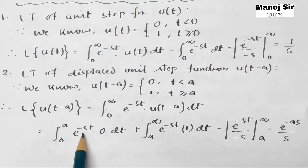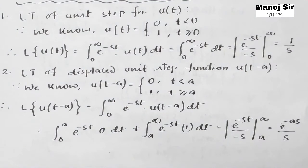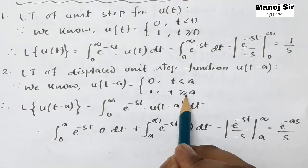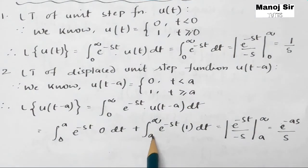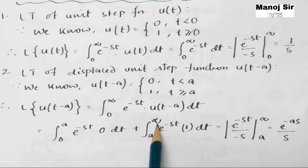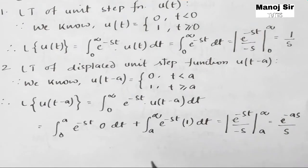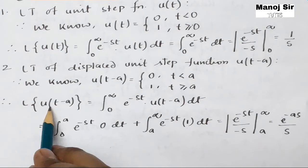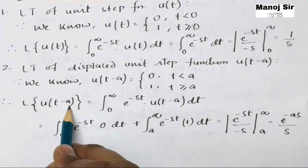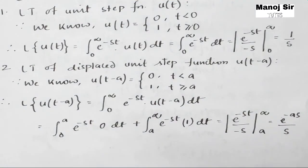So the integral from 0 to a of e to the power minus s t into 0 dt equals zero, because when t is less than a the function u(t minus a) is 0. When t is greater than or equal to a, we get the integral from a to infinity of e to the power minus s t into 1 dt. Solving this gives e to the power minus s t upon minus s, with limits a to infinity. Evaluating gives e to the power minus a s upon s. So the Laplace transform of u(t minus a) equals e to the power minus a s upon s.